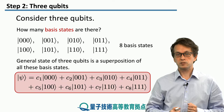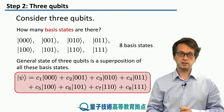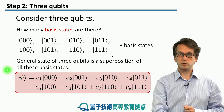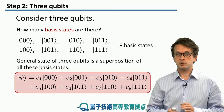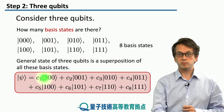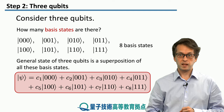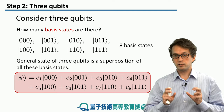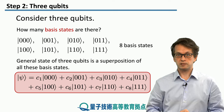Any general pure state can be written as a general superposition of all of these eight basis states. We can write any general pure three-qubit state as a superposition of all of these with some arbitrary probability amplitudes given by c1, c2, all the way up to c8. Depending on the particularities of the superposition that we take, we may end up in a separable state or an entangled state.